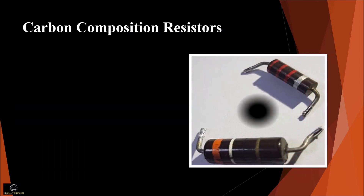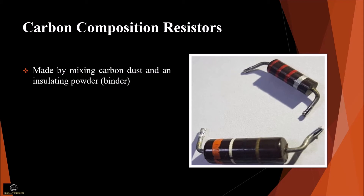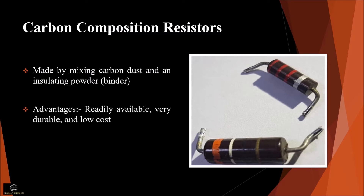The figure shown here is of the carbon composition resistor. The resistors are made by mixing carbon dust and insulator powder, which we can also call a binder. It acts as a binding agent and is then converted into a small rod. The ratio of the insulation material determines the actual resistance of the resistor. The main advantages are that they are readily available, very durable, and of low cost. The disadvantage is that they are very temperature sensitive.